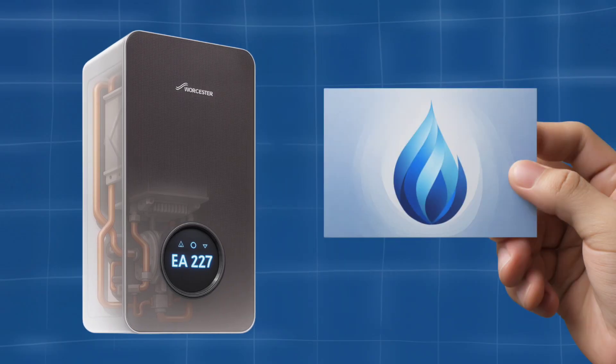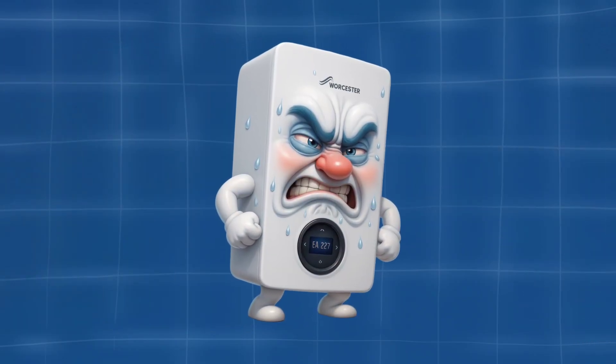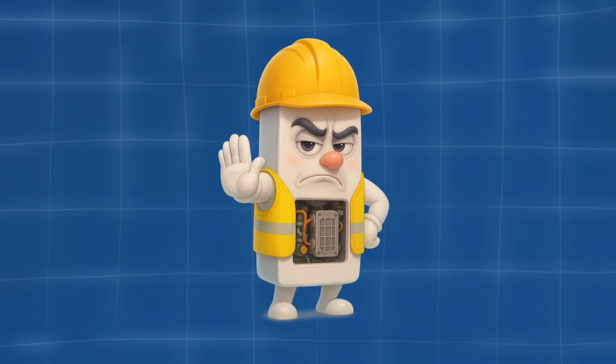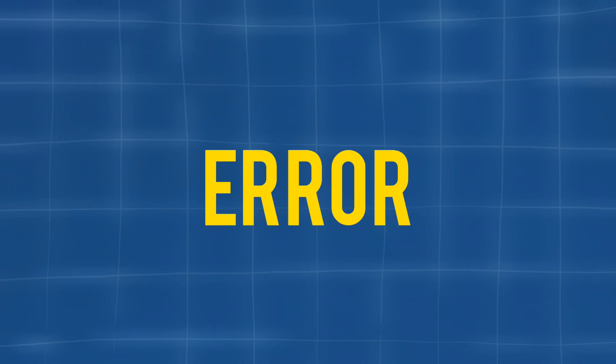EA-227 is a flame detection fault. The boiler's tried to light, but it hasn't sensed a flame, or it lost the flame during operation. So the system shuts down to stay safe. Now let's look at what can cause it.